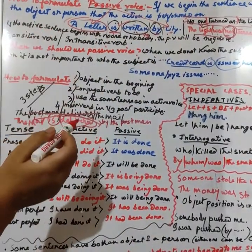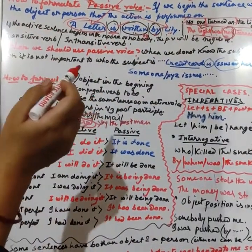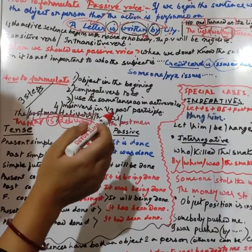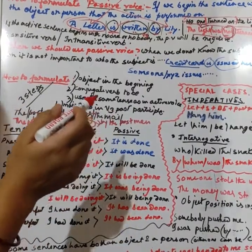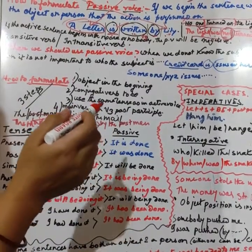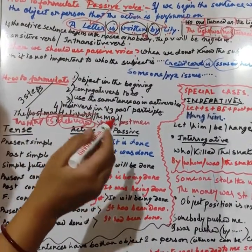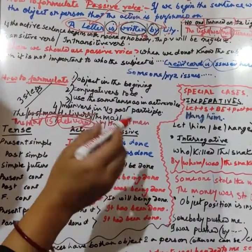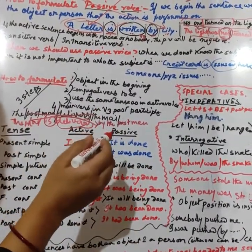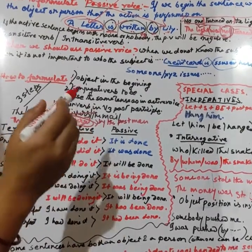What do we mean by the subject as acting? It means that the subject is the doer. The subject is working.